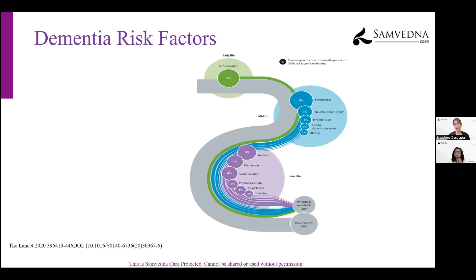One of the most important risk factors in midlife — that blue circle on this slide — is hearing loss, which carries an 8% risk association. We see a lot of resistance among the people we work with at Samvetna about getting hearing checked and using a hearing aid if required. This can actually put you at greater risk for developing dementia, so it's important to get your hearing checked in midlife.